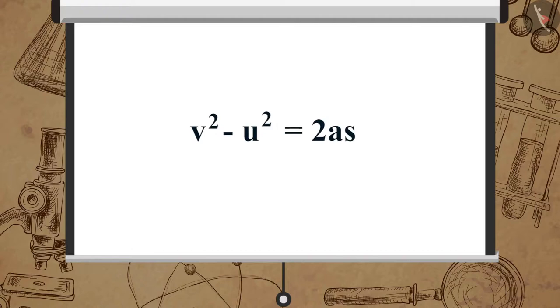Remember we studied the three equations of motion. And according to the third equation, V square minus U square is equal to 2AS, from which we derived displacement S is equal to V square minus U square divided by 2A.